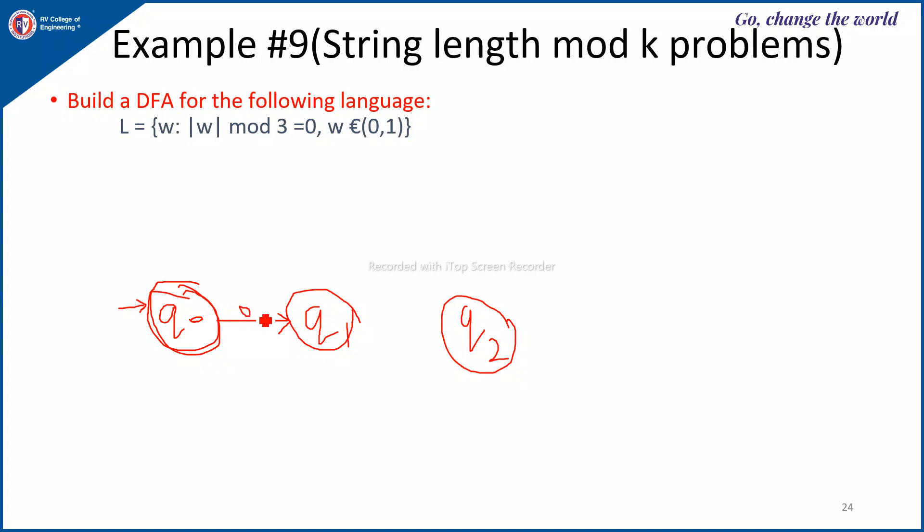So it is either 0 or 1. Next, after the first symbol which is 0 or 1, if the next symbol is either 0 or 1, the length becomes 2. So the string should take the machine from start state to the state Q2.